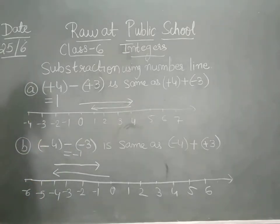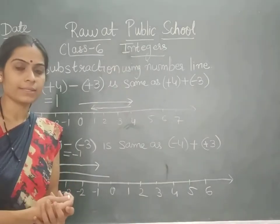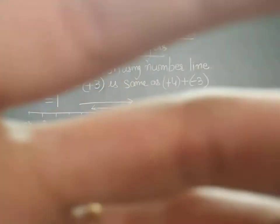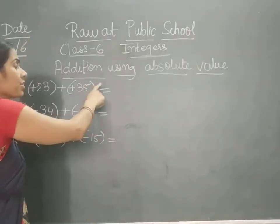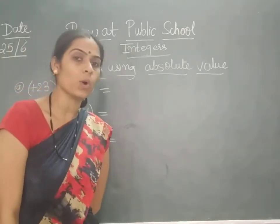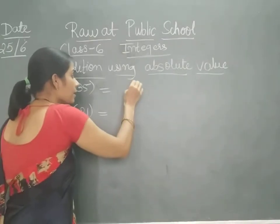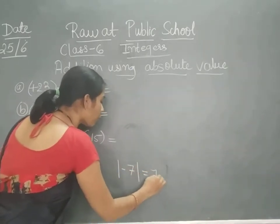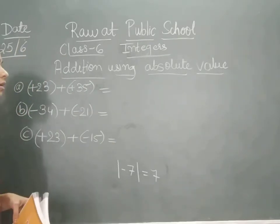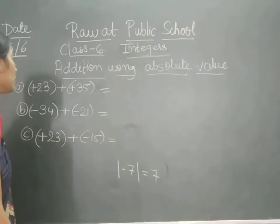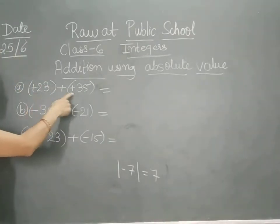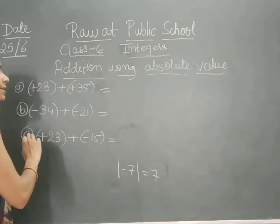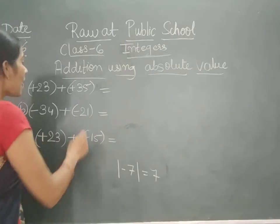In this way we can do addition and subtraction using the number line method. Now there is another method — that is the absolute value method. Addition using absolute value: as you all know, absolute value is geometrically symbolized with these bars. If any number is given, its absolute value will be the positive value. Here I have taken an example where both integers are positive: plus 23 and plus 25. We just add them, and the sign will be positive.